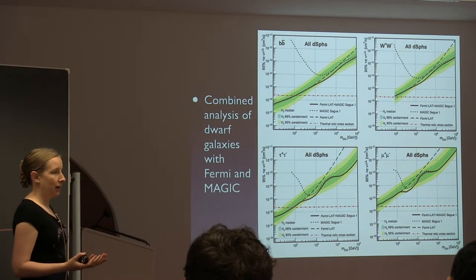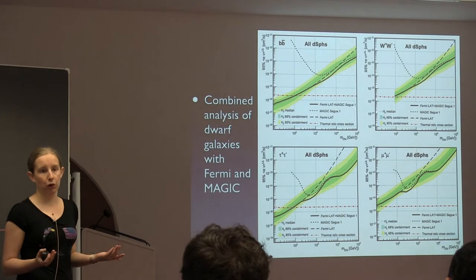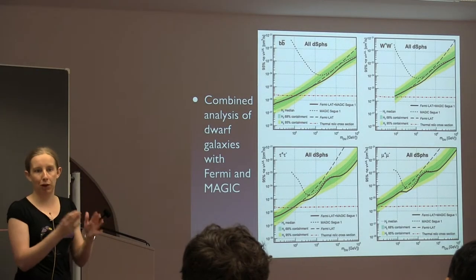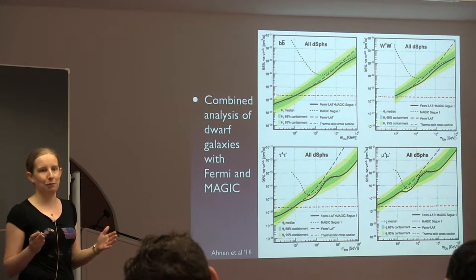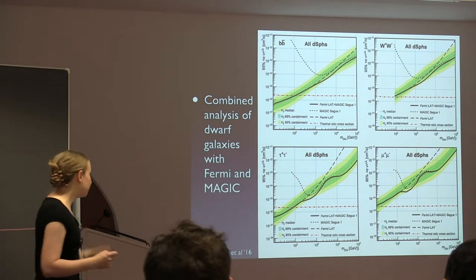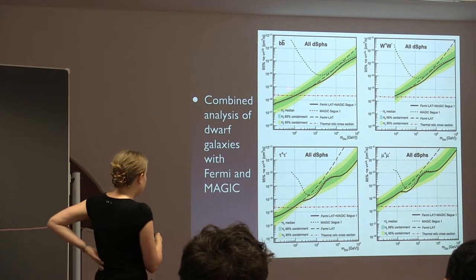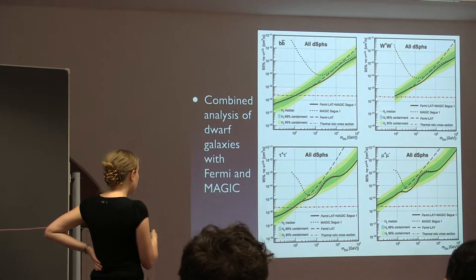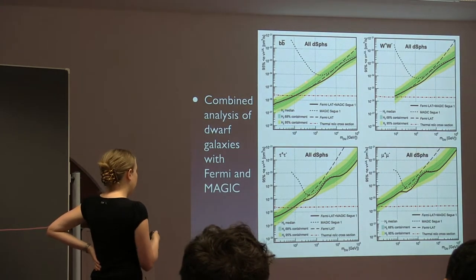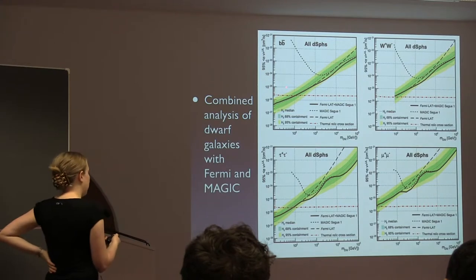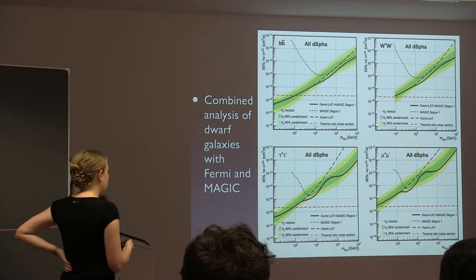Below about a TeV in dark matter mass, Fermi really dominates the constraint. It's hard to compete with Fermi at those low energy scales. But at higher energies, the Air Cherenkov telescopes take over because, being Earth-based, you can build them with effective areas of 10^4 or 10^5 square meters instead of 1 square meter like Fermi. The red dashed line is the thermal relic cross-section, showing these limits are basically constraining thermal relic dark matter annihilating to b quarks or tau leptons below about 100 GeV.